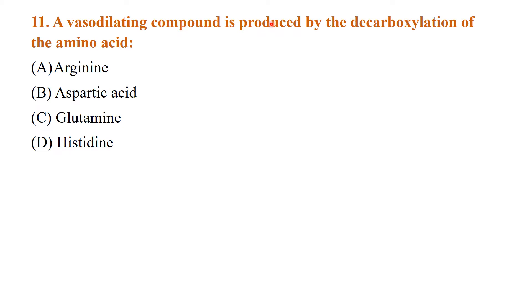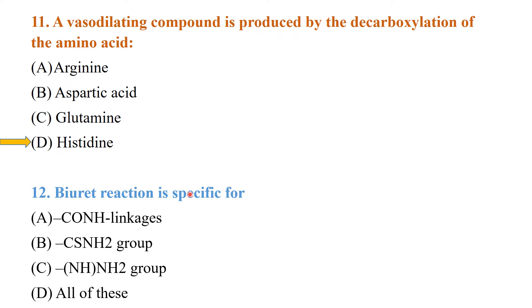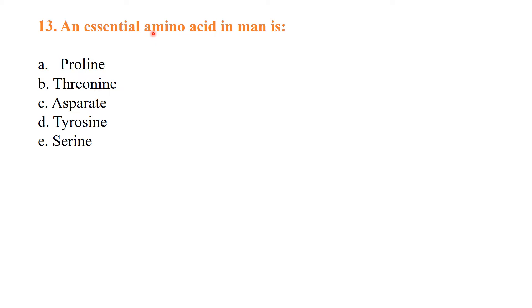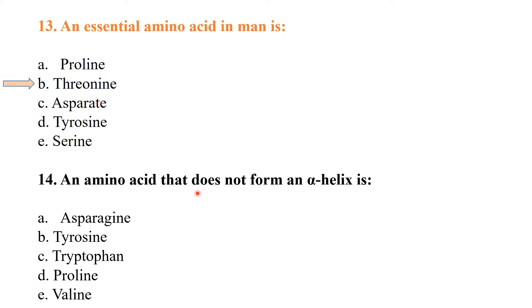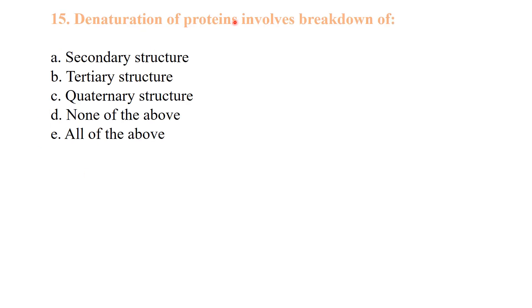A vasodilating compound is produced by the decarboxylation of amino acid, mainly histidine. Biuret reaction is specific for carbon monoxide CO and NH linkage. Biuret test is mainly used for detection of protein, so mainly in protein there is a link between CO and NH. An essential amino acid in man is threonine. The amino acid that does not form an alpha helix is proline.